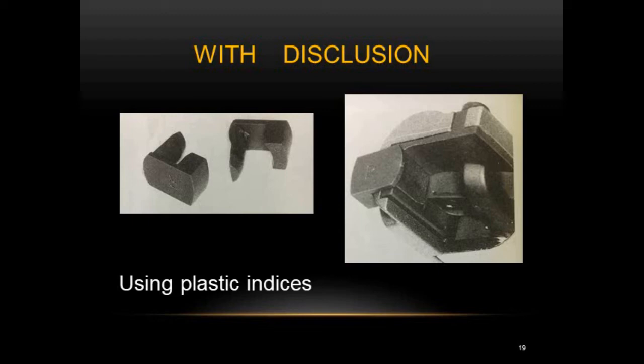For the incisal table with disclusion, plastic indices are inserted into the right and left condyles of the articulator fossa boxes. These indices are 3 mm thick, so inserting them simulates the articulator automatically into a 3 mm protrusive position. To simulate lateral excursion, the plastic index is inserted on either condyle to bring the articulator into the lateral excursive position. First, both condyles receive the spacers to bring the articulator to a 3 mm protrusive position.